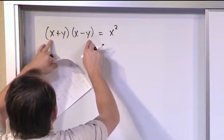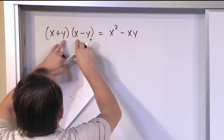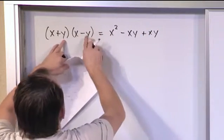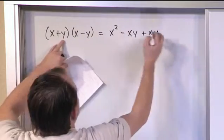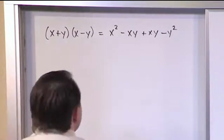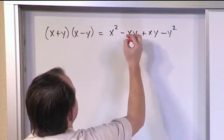Outside terms, since you have the negative y times the positive x, can be negative xy. The inside terms is going to be x times y. And the last terms is negative y times y is negative y squared. So that's all correct, but then you realize that negative xy cancels with positive xy. So they subtract to zero.